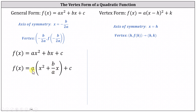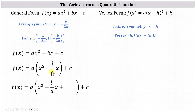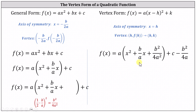Notice the x-term doesn't have a factor of a, so factoring a from the first two terms gives us f(x) = a times (x² + (b/a)x), plus c. Notice a times (b/a) times x equals bx, since a/a simplifies to 1. Now we need to complete the square on the expression inside the parentheses by adding the square of half the coefficient of x, which is (b/2a)² = b²/4a².